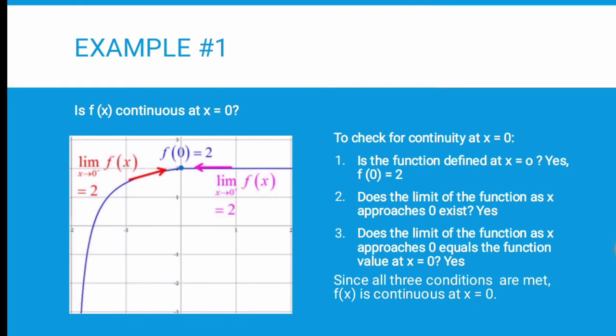Number two: does the limit of the function as x approaches zero exist? The answer is yes. Number three: does the limit of the function as x approaches zero equal the function value at x equals zero? Yes. Since all three conditions are met, f(x) is continuous at x equals zero.